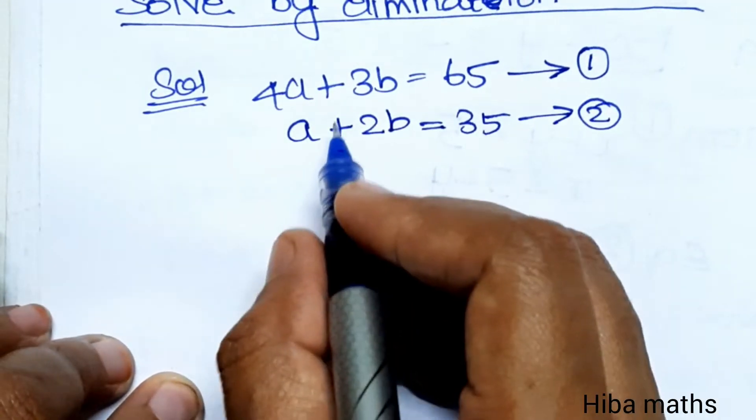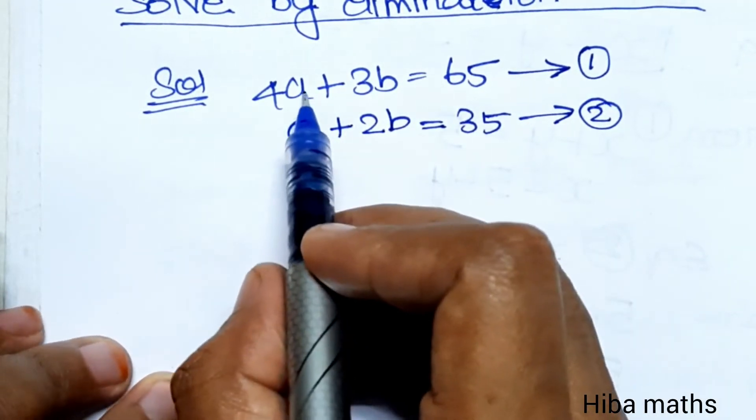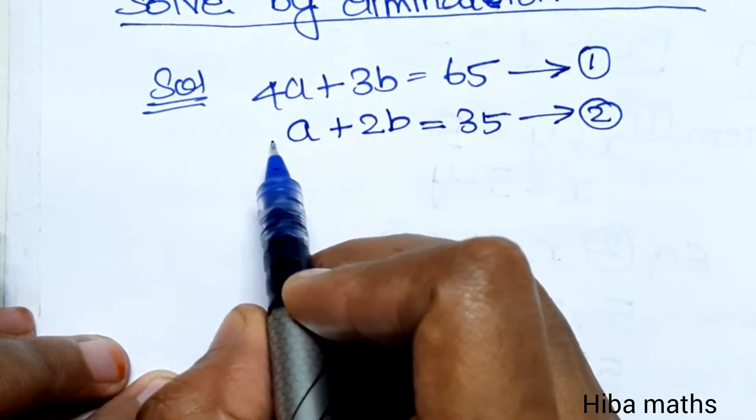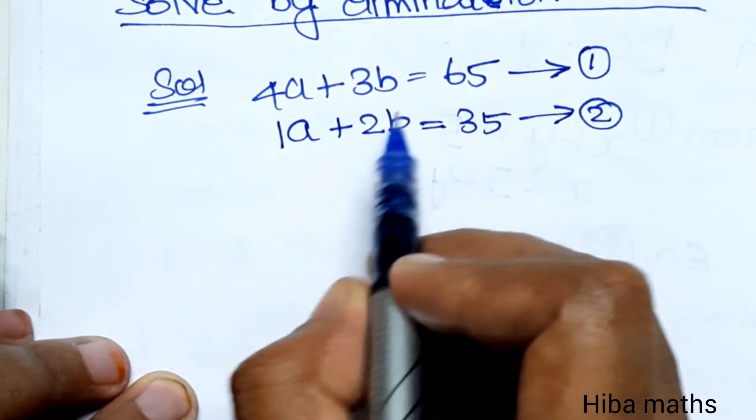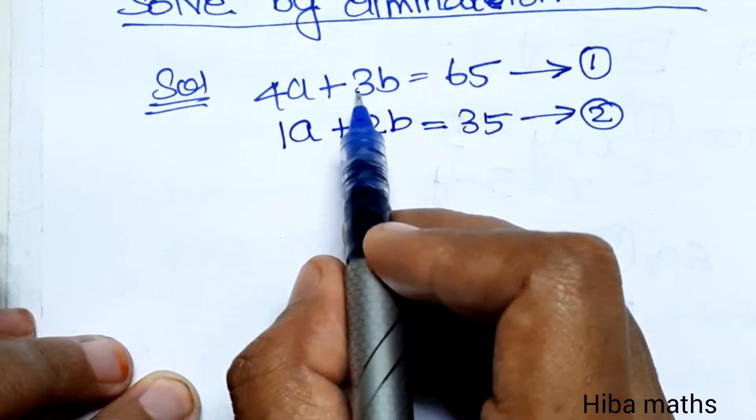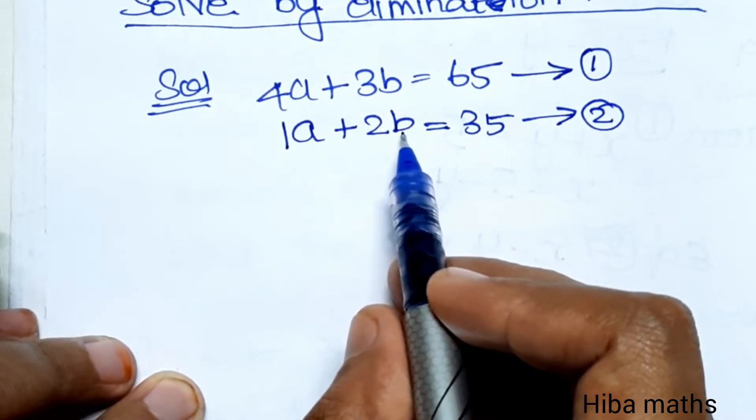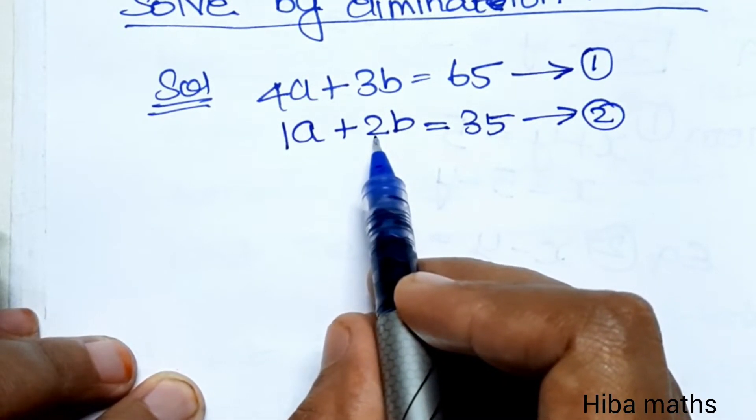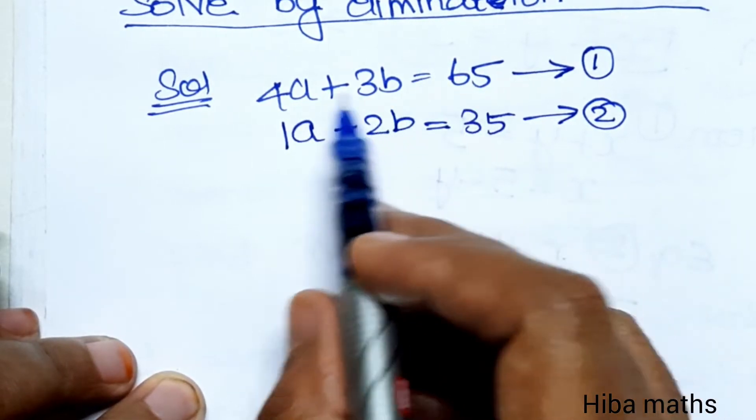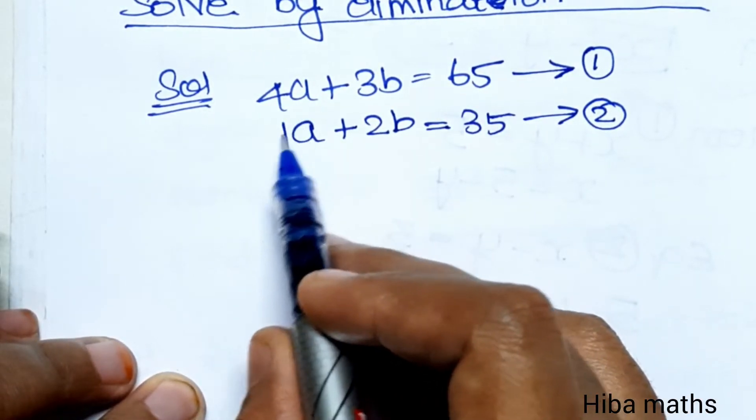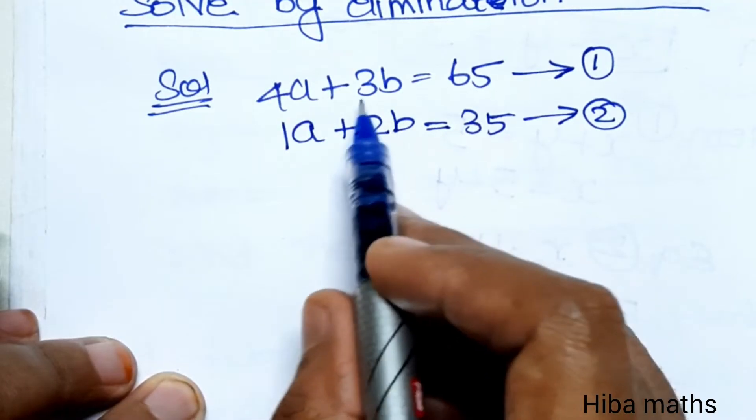Now in the two equations, the coefficient of a is 4 in the first and 1 in the second. The coefficient of b is 3 in the first equation and 2 in the second. In the elimination method, we need to make the coefficients equal.